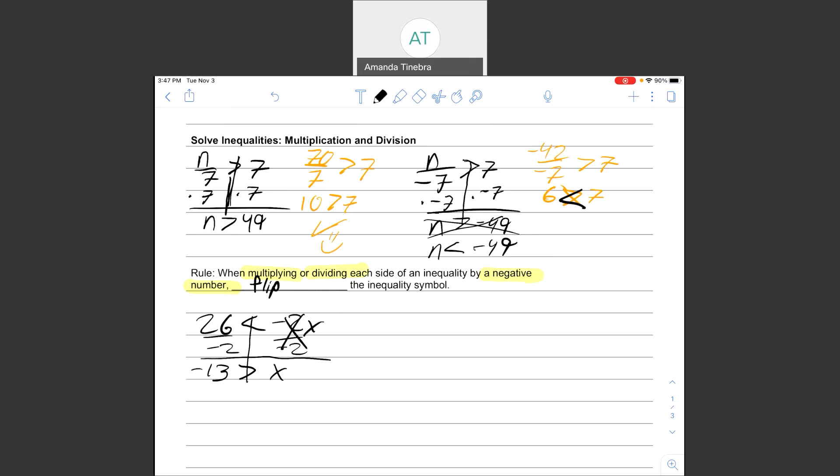You could also do it with, if I had y divided by negative 5 is less than or equal to 20. Again, I would draw my line through the equal sign. This time I'm multiplying by negative 5 on each side.